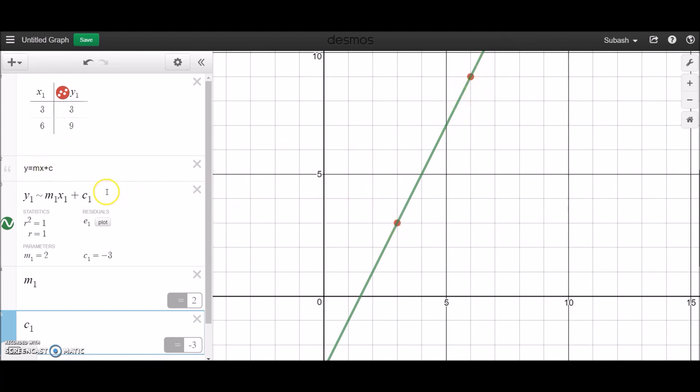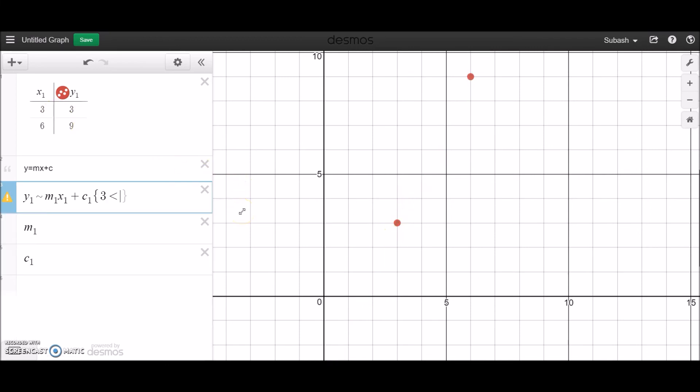One other trick that I want to show you guys is how to actually create this line but only covers these two red points. So the line is only between the two red points, and that's using the domain. So for the domain I open up my brackets and I want it between 3 to 6.